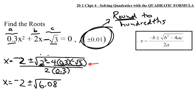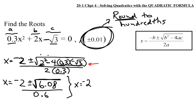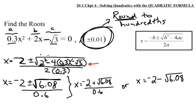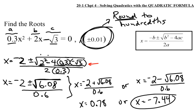You should keep that radicand value in your calculator without rounding it to the hundredth place. All of this is over 0.6, which is 2 times 0.3. Splitting into two calculations: x equals negative 2 plus square root of 6.08 divided by 0.6, or x equals negative 2 minus square root of 6.08 divided by 0.6. The first value rounds to x equals 0.78, and x could also equal negative 7.44.